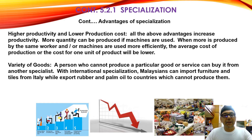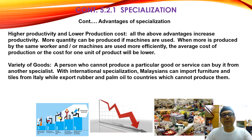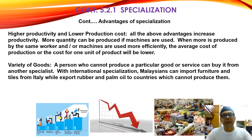Higher productivity and lower production cost: all the above advantages increase productivity. More quantity can be produced when machines are used. When more is produced by the same worker and machine, more efficiently, the cost will be lower. So production cost is lower, then you can sell a cheaper product, more people can buy, and you can make more profit. Variety of goods: a person who cannot produce a particular good or service can buy it from another specialist. With international specialization, Malaysia can import furniture from Italy while exporting rubber and palm oil to other countries which cannot produce them. We specialize in rubber production and palm oil, whereas we buy high-end furniture from Italy because they specialize in that area — we cannot compete with their cost.